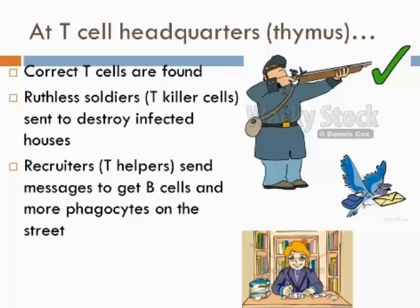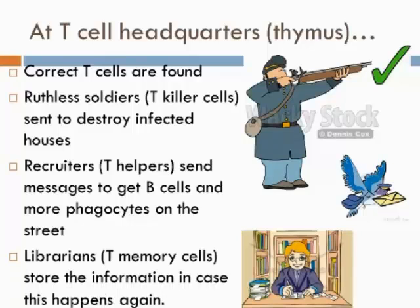The T cells also have recruiters whose job is to send more messages out — more pigeons — to recruit the B cells and to get more phagocytes, more cleanup trucks, to the site of the action to clear up any unwanted pathogens. We've also got the librarians at T cell headquarters, which are the T memory cells, and they have the really important job of recording and storing information just in case something like this were to happen again.